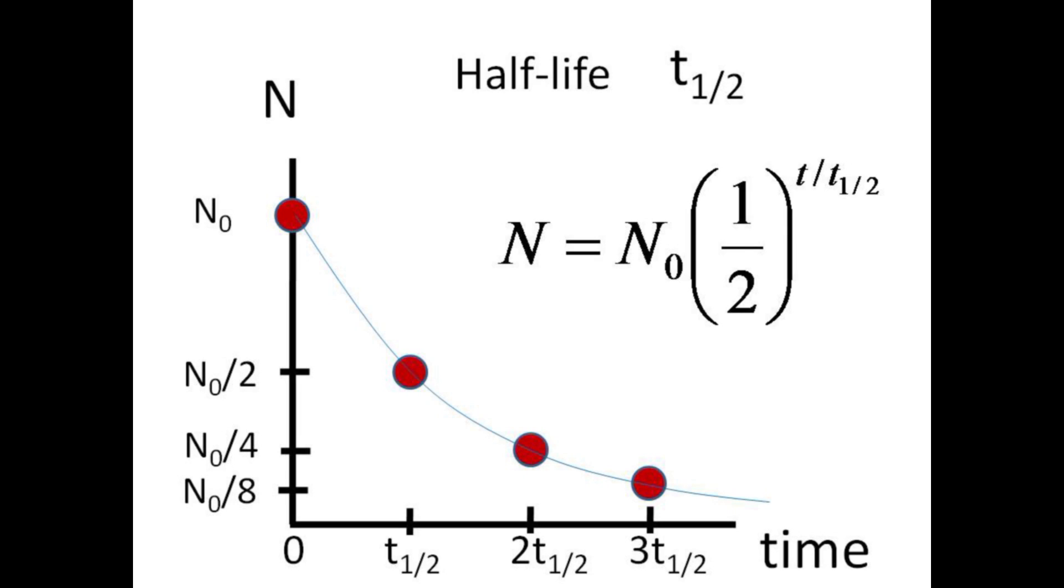At any intermediate time t, we will have N0 times one-half raised to the ratio t over t one-half. Thus, given the half-life, we can predict the number of radioactive nuclei remaining after time t.